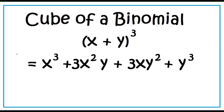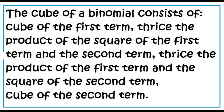The cube of a binomial is of this form: the cube of the quantity x plus y is equal to x cubed plus 3x squared y plus 3xy squared plus y cubed. The cube of a binomial consists of: cube of the first term, thrice the product of the square of the first term and the second term, thrice the product of the first term and the square of the second term, and cube of the second term.